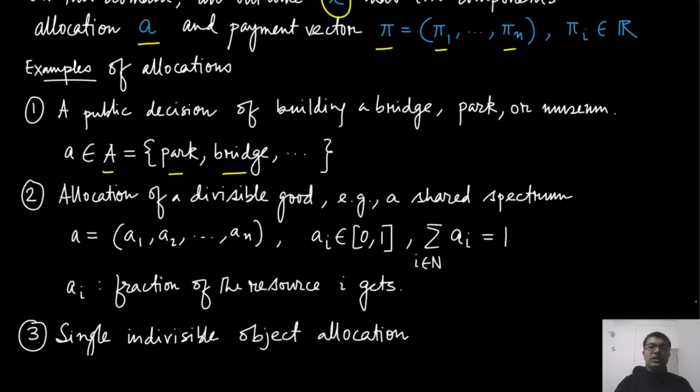If you are talking about a divisible good, suppose the government is trying to share the spectrum for 4G, then the allocation would look something like this. It is a vector where each of these a_i are some share of the total resource. The sum over a_i is always going to be 1, but a_i are living between 0 and 1. That is the share of the spectrum.